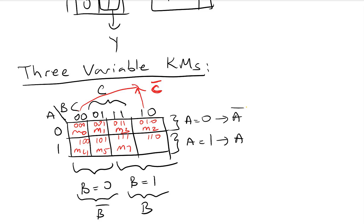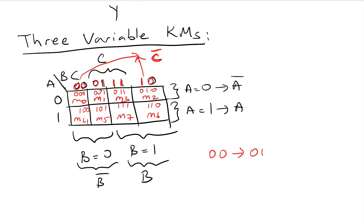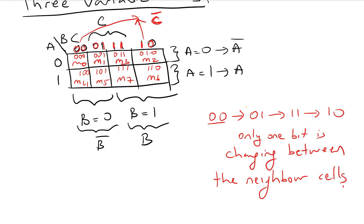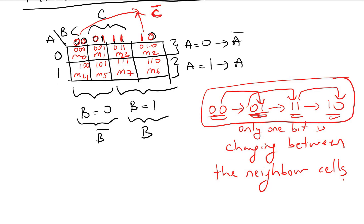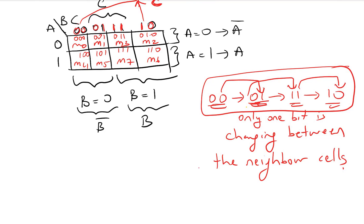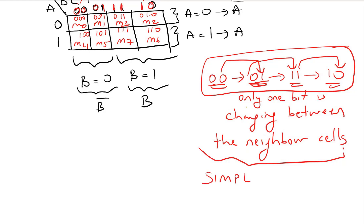Notice the column order: 00, 01, 11, 10 — not the natural binary order. Instead of going 00, 01, 10, we go 00, 01, 11, 10. We follow this Gray code order because in the K-map, if we want to do grouping, we need to make sure only one bit is changing between neighboring cells. From 00 to 01 only one bit changes; from 01 to 11 only the left bit changes; from 11 to 10 only the right bit changes.